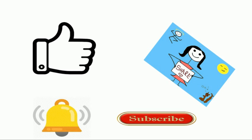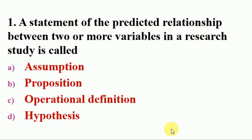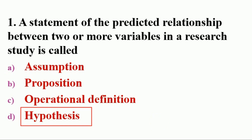First question: a statement of the predicted relationship between two or more variables in a research study is called — options: A. assumption, B. proposition, C. operational definition, D. hypothesis. The answer is D, hypothesis. An example is 'alcohol consumption causes liver disease,' where the two variables are alcohol consumption and liver disease. Assumptions, by contrast, are statements considered to be true but not scientifically proved — for example, 'God exists everywhere in this universe.'